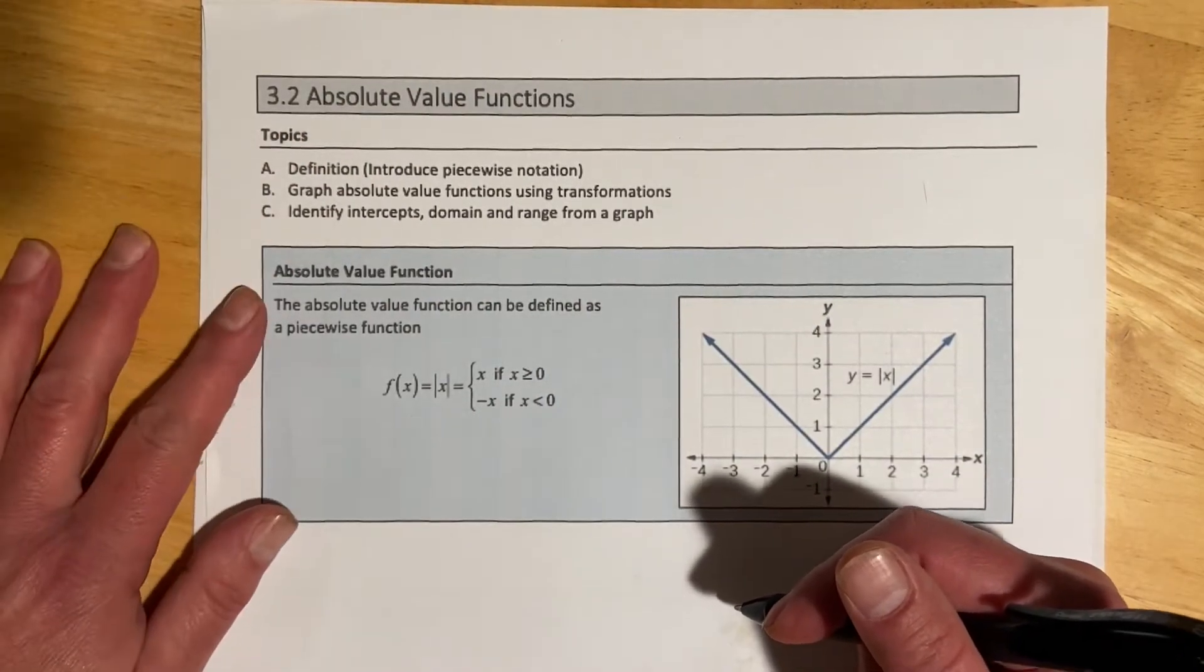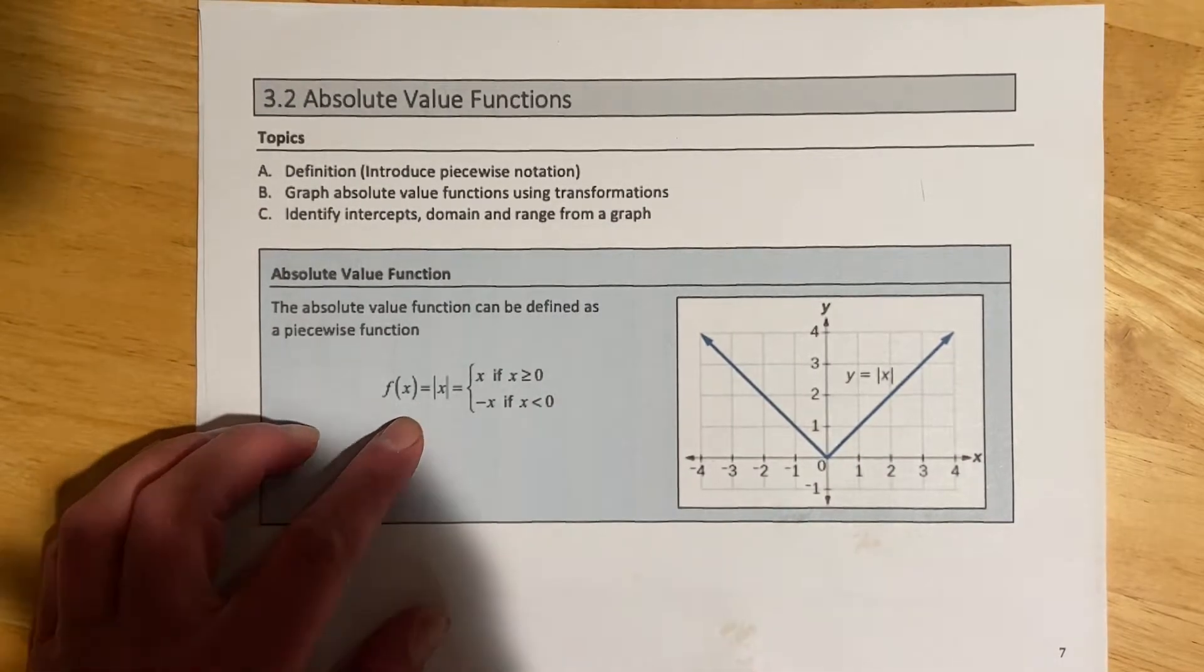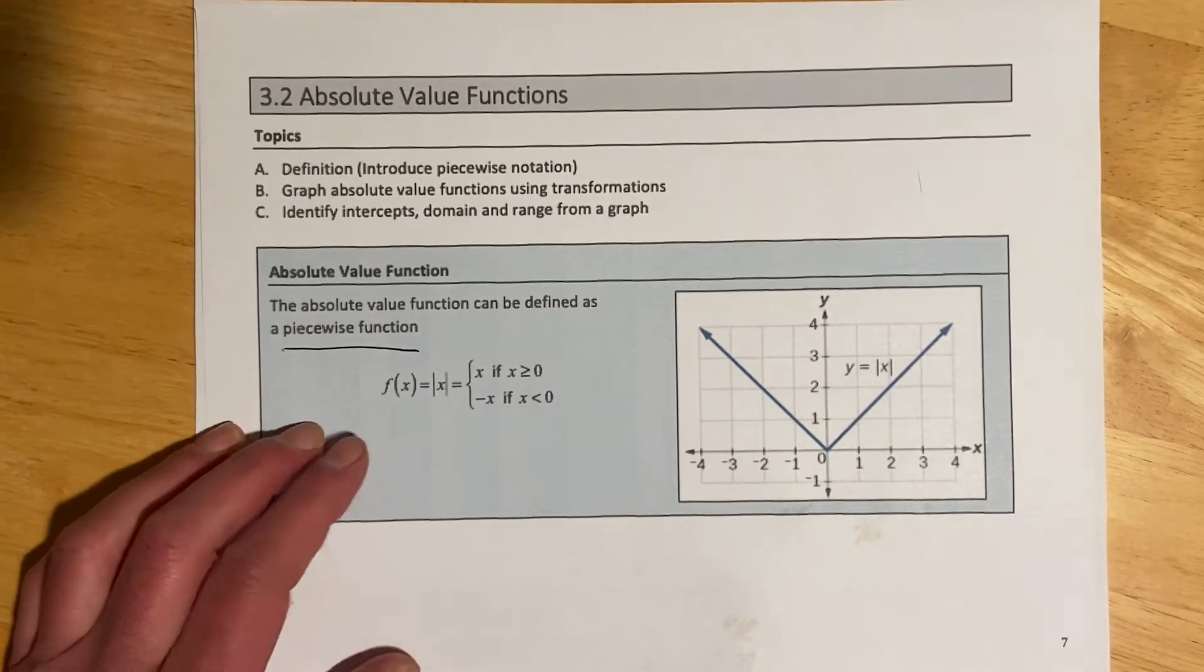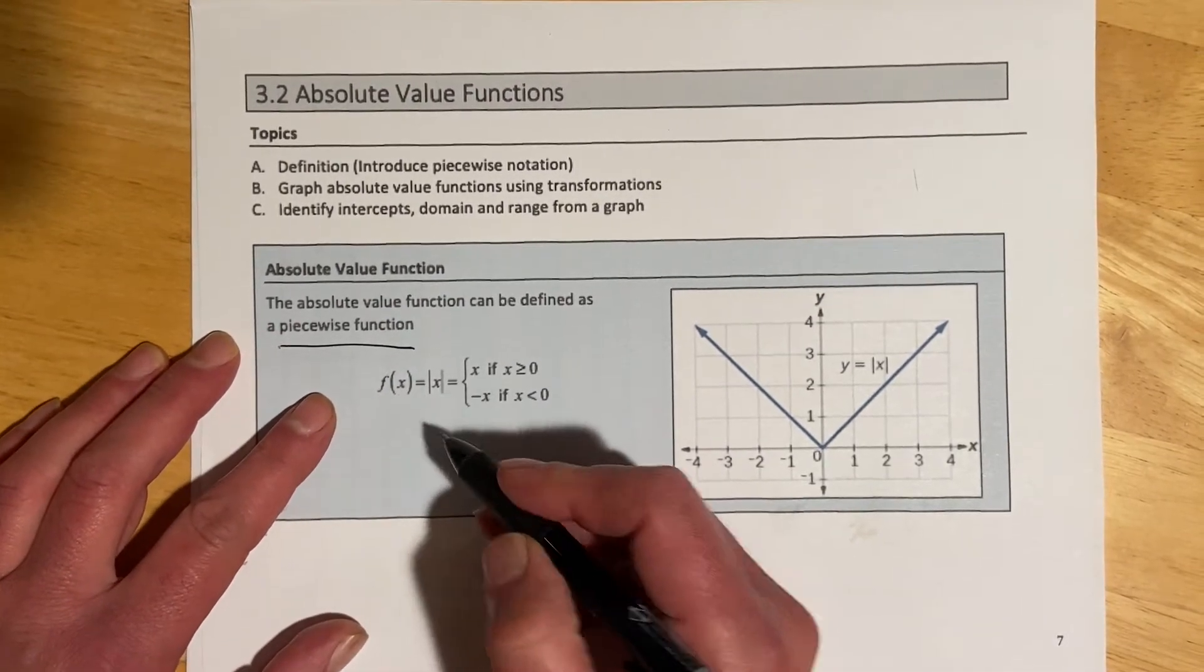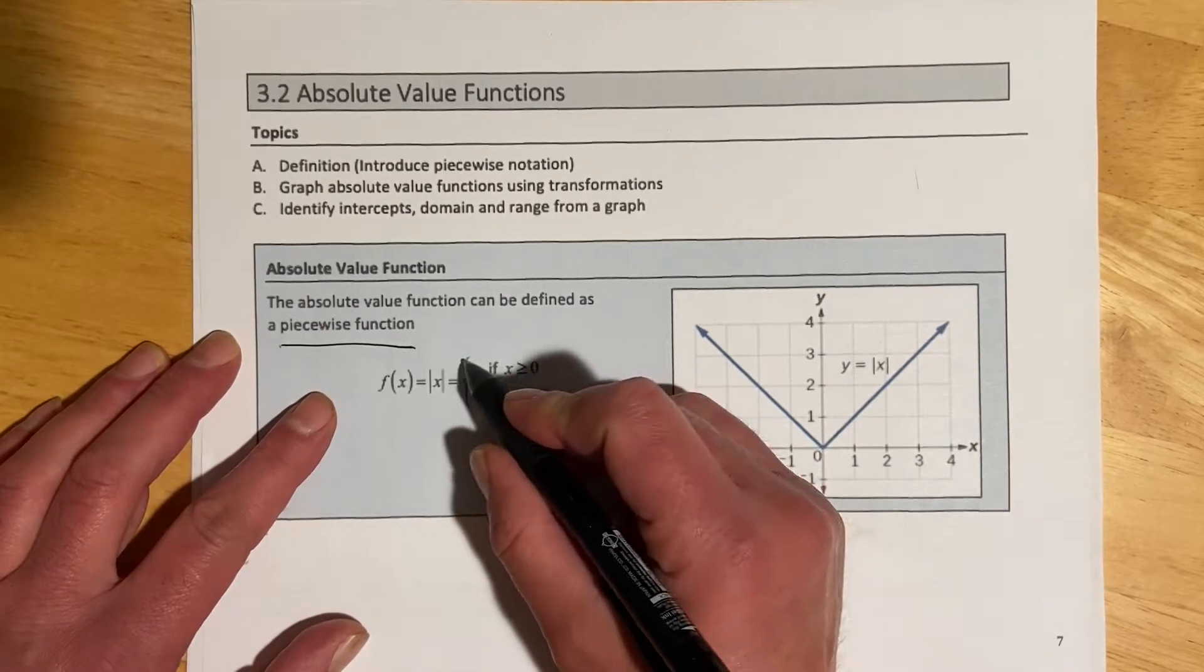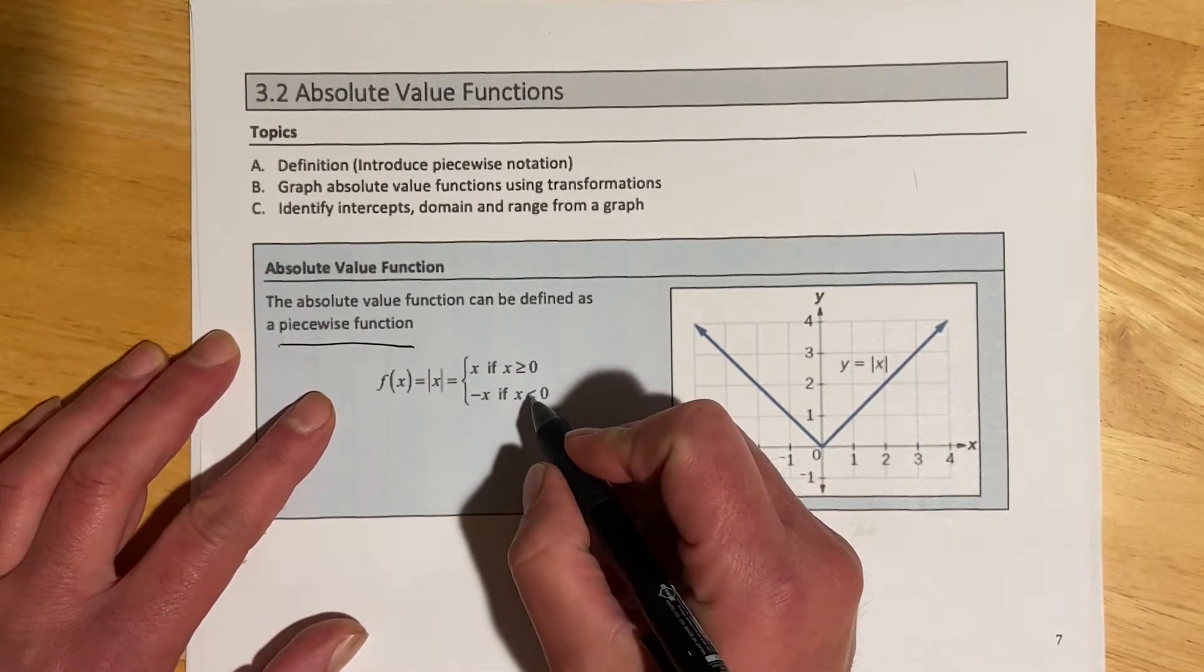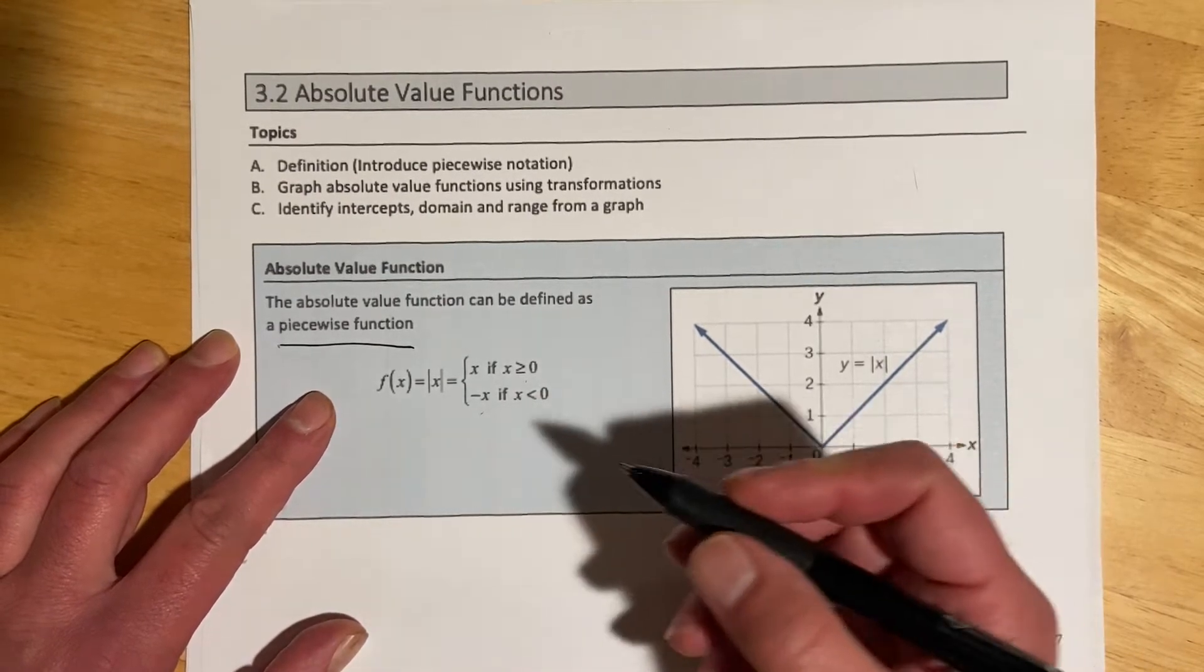The definition of an absolute value function uses a piecewise function. f(x) equals absolute value of x. When x is greater than or equal to 0, it equals x. When x is less than 0, it equals negative x.